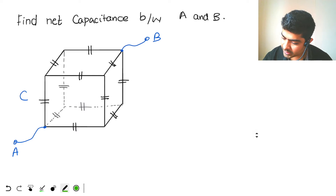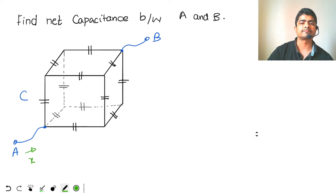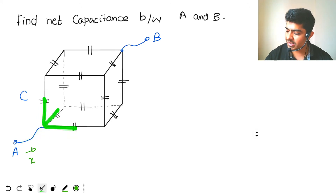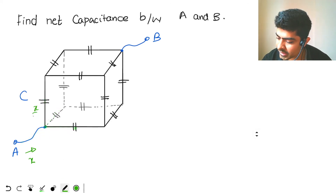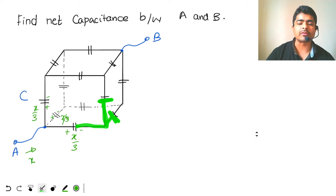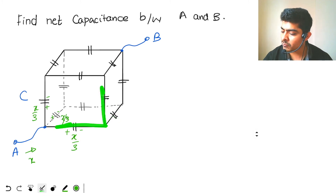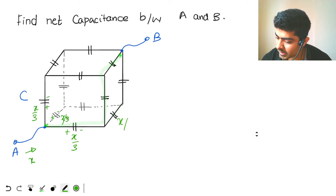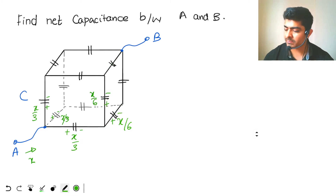Let's assume that the charge entering from A is x. By symmetry, this charge should equally distribute in the three directions, because all three directions are exactly identical. So here we get x/3, here also x/3, and here also x/3. Now since here I have x minus x/3, these two capacitors should have half the charge x/3 — again by symmetry, both edges are identical. So here I have x/6 and here also x/6.